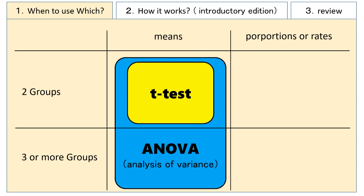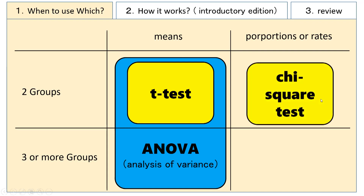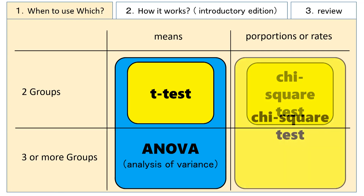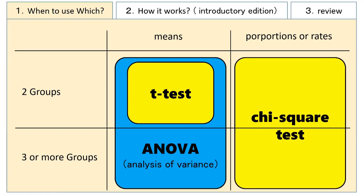What about comparisons of proportions or rates? Chi-square test is often thought to apply only to two groups, but it actually covers both two-group and three-or-more-group comparisons of proportions or rates. Similar to ANOVA, chi-square test can be used for comparing proportions or rates between two groups as well as among three or more groups.